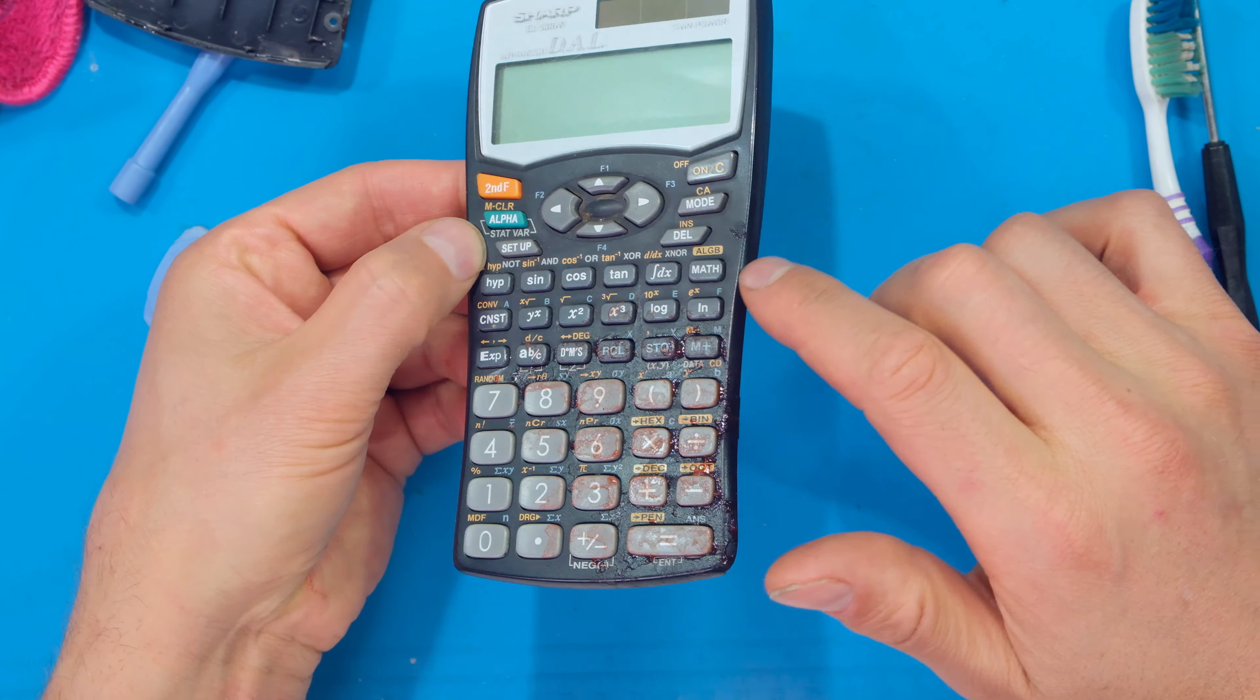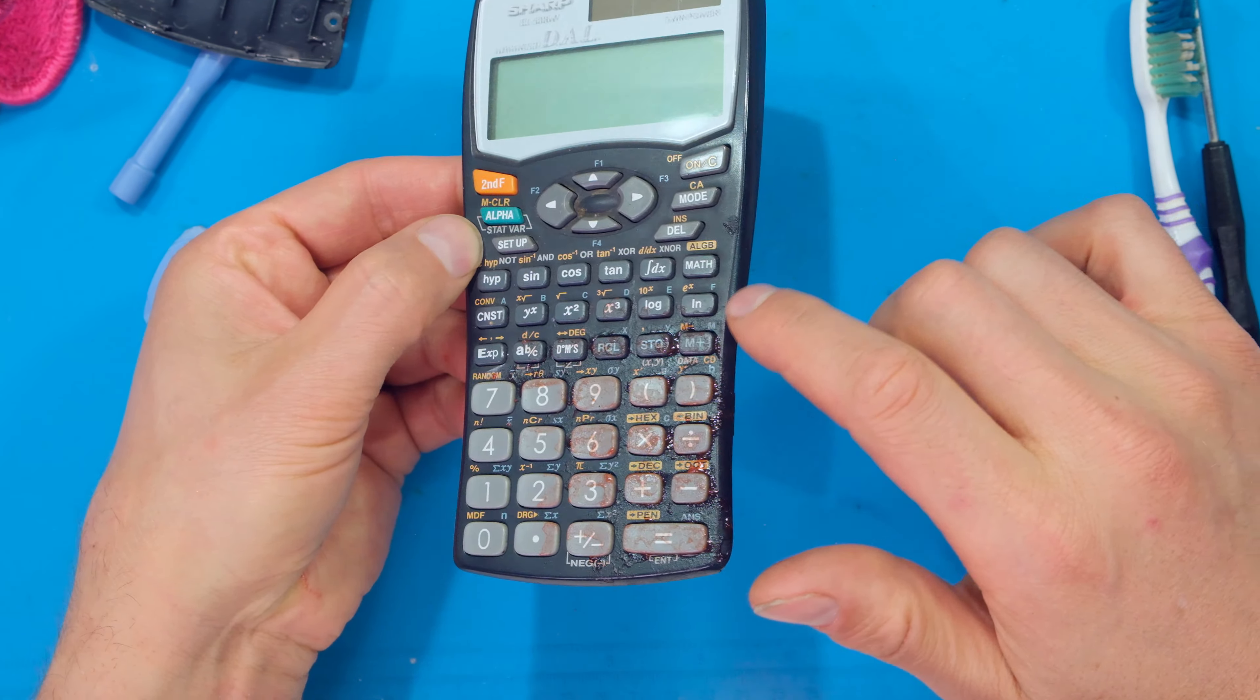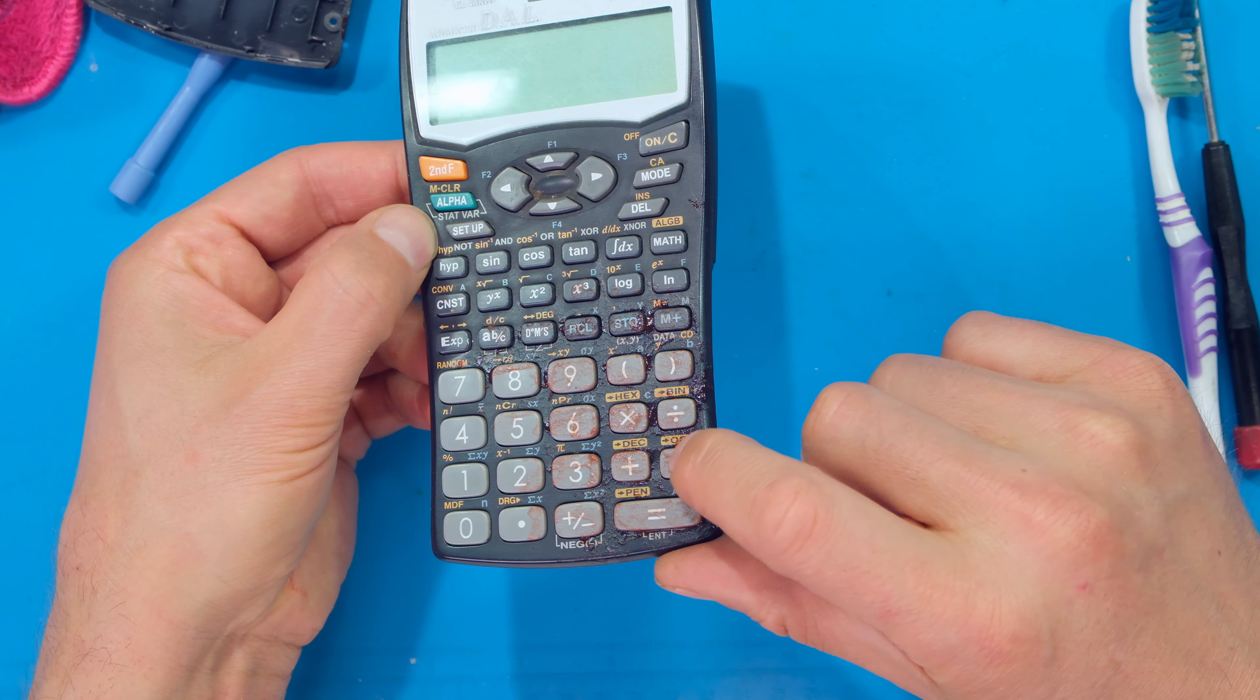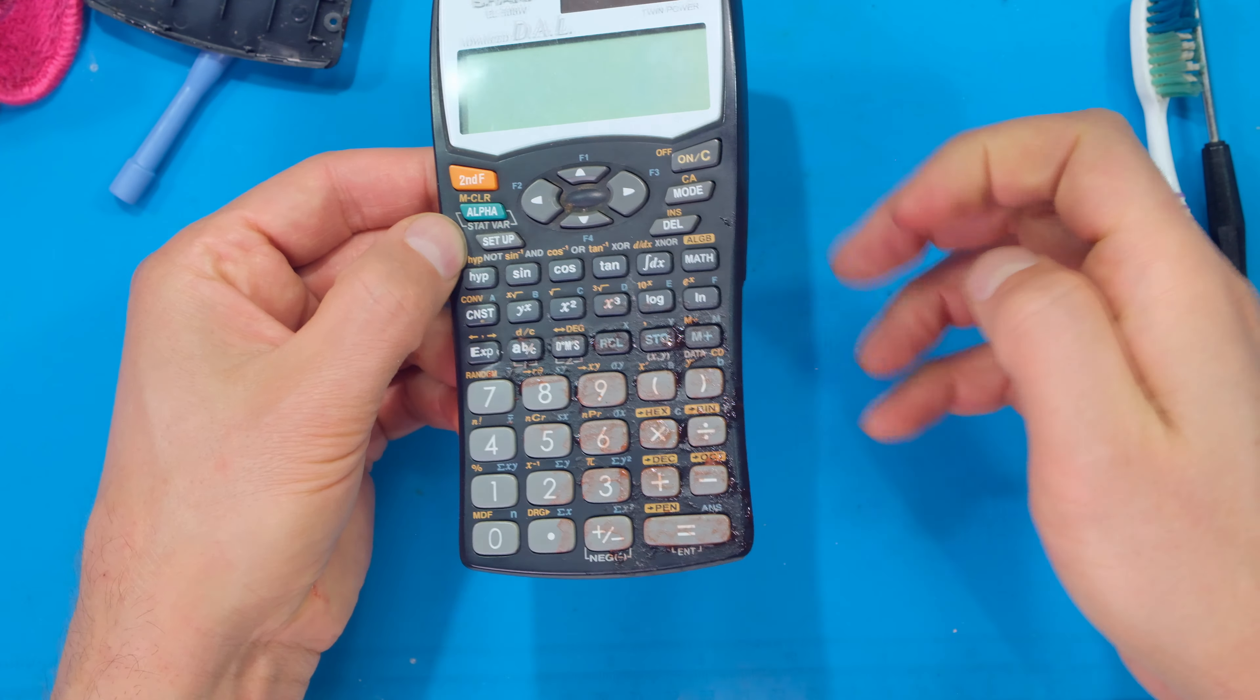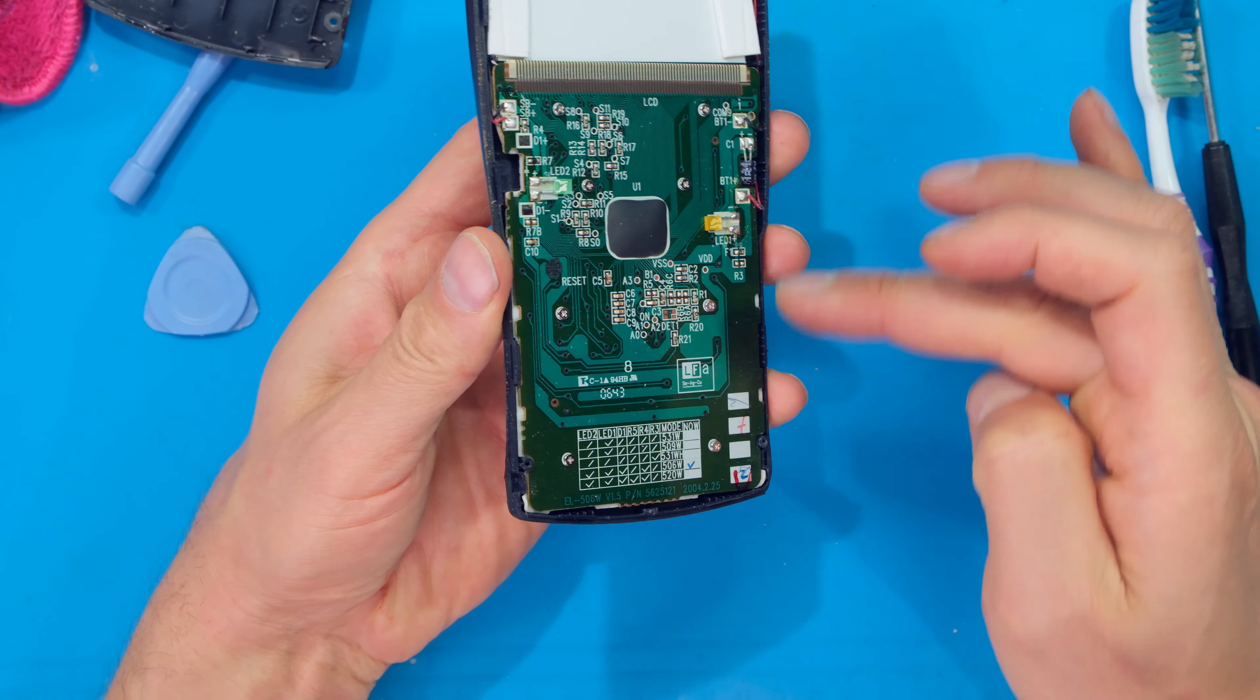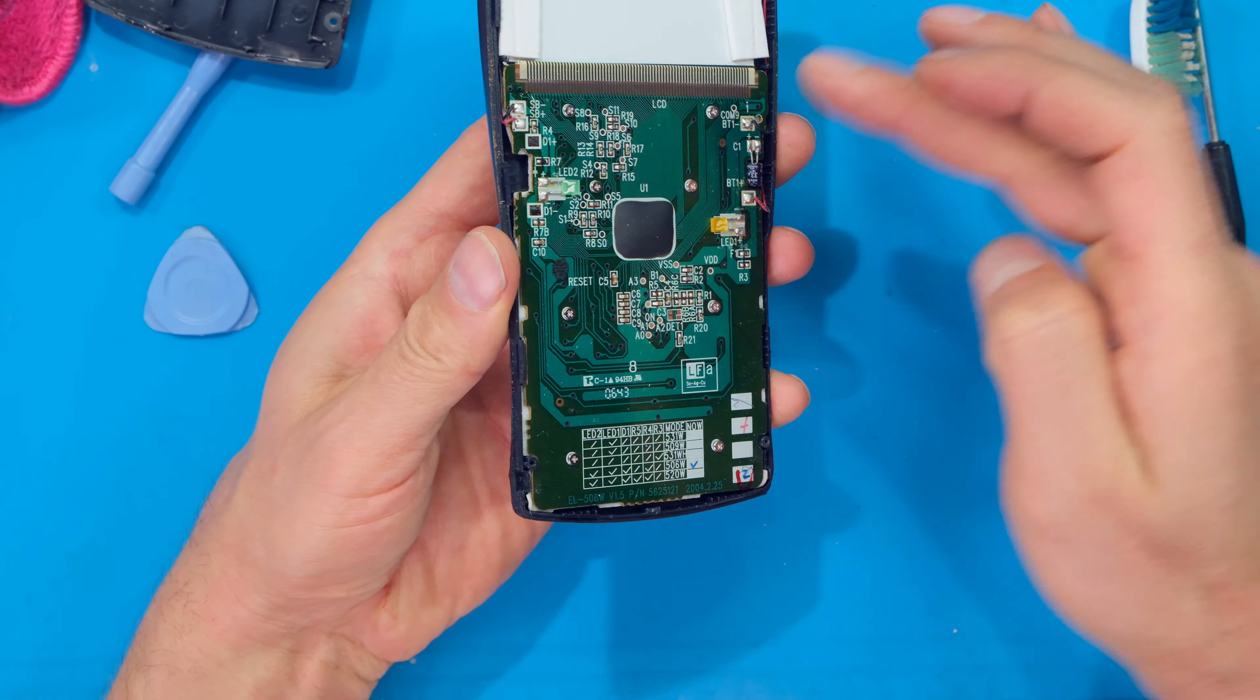Unfortunately the sauce has gotten inside there, so even if I did clean just the top I would still have the problem of the buttons being sticky from the inside. So what I have to do is remove the circuit board. At the back here there's a couple of screws and I just have to be very careful here. On this unit there were quite a number of screws - yours might not have any screws.